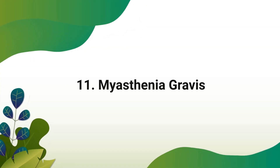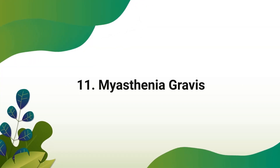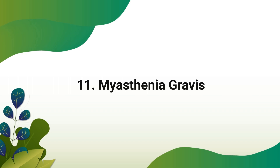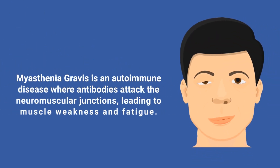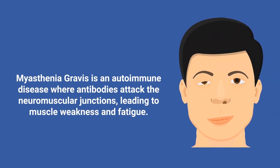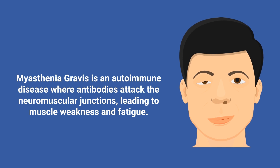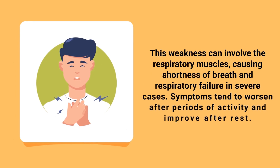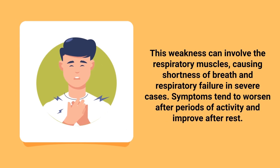Myasthenia Gravis is an autoimmune disease where antibodies attack the neuromuscular junctions, leading to muscle weakness and fatigue. This weakness can involve the respiratory muscles, causing shortness of breath and respiratory failure in severe cases. Symptoms tend to worsen over periods of activity and improve after rest.